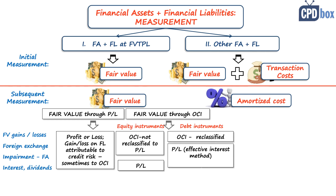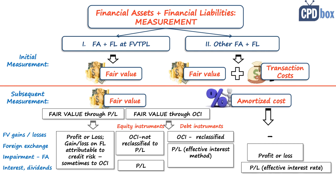For the last category — financial assets and liabilities measured at amortized cost — changes in fair value are not applicable; we simply don't track subsequent fair values here. Foreign exchange differences and impairment related to financial assets in this category shall be recognized in profit or loss. Any interest income or expenses are also recognized in profit or loss, and here you need to apply the effective interest method.